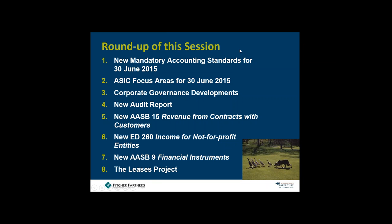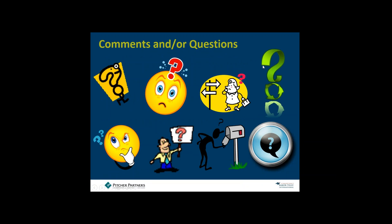Thank you very much for joining today. We will revisit AASB 9, AASB 15, the not-for-profit replacement for AASB 1004, and the final leases standard in future webinars. For 30 June 2015, sections one, two, and three are most important. Sections four to eight look further ahead. Good luck preparing financial statements — listed entities by end of September, others by end of October. Webinars will resume in November.